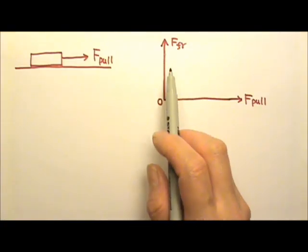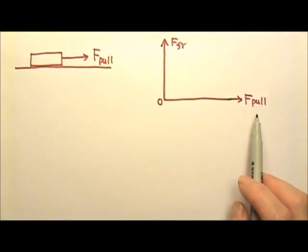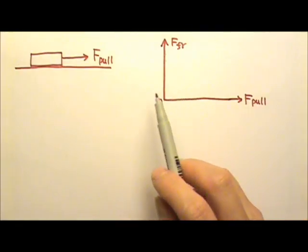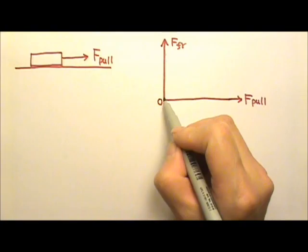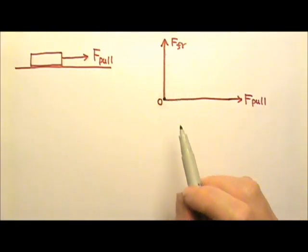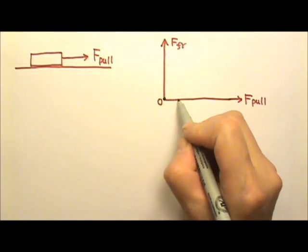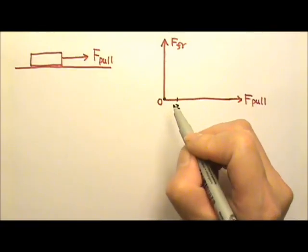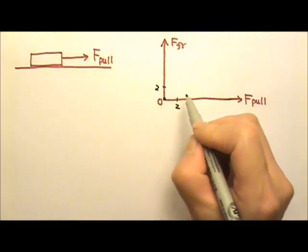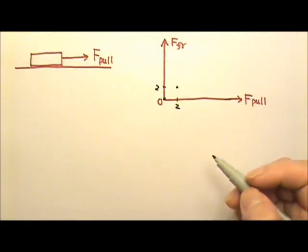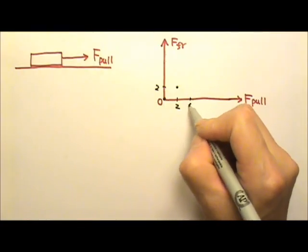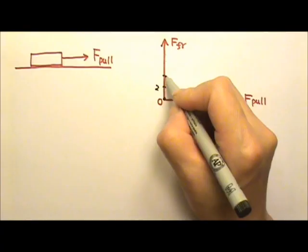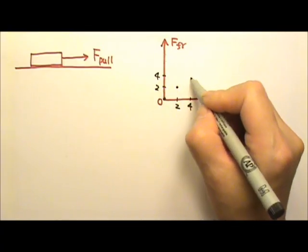Now, let's plot a friction versus my pulling force graph. When there was no pulling force, the friction was zero. When I pulled with two newtons, friction was also two newtons. And then I increased my pull to four newtons. Friction was also four newtons.